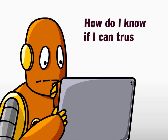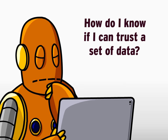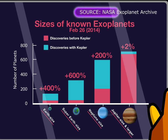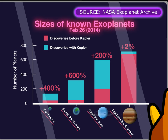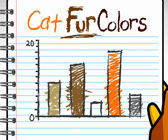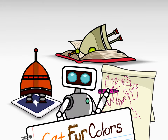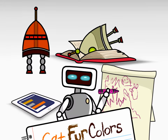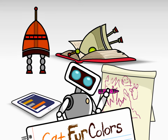How do I know if I can trust a set of data? First, look at who collected it. Are they an expert on whatever the data are about? If you're looking at info from NASA about planets, you can trust that everything's up to snuff. Data from non-experts, like a classmate, can be reliable too. But you should take a look at how they collected their information to make sure it checks out.